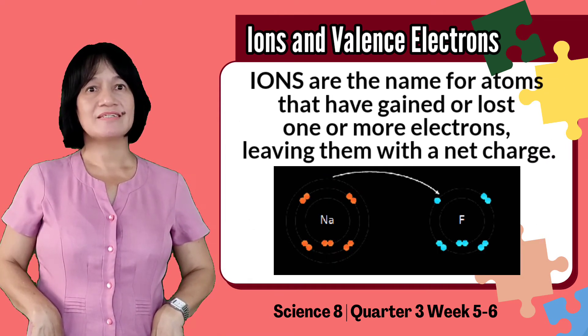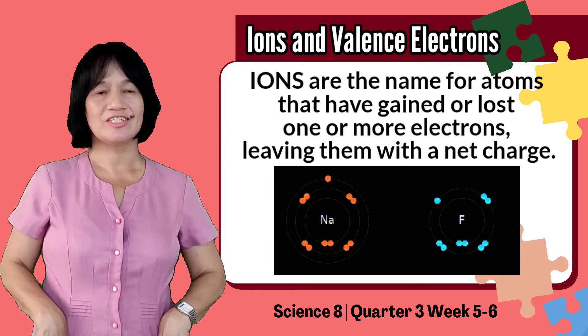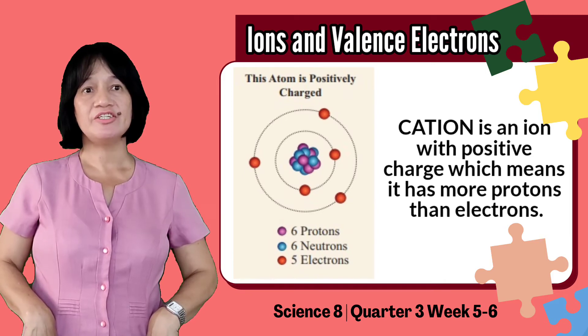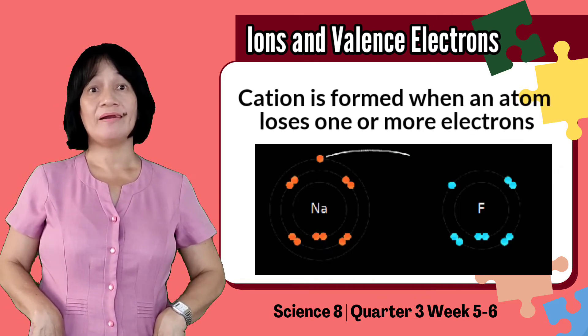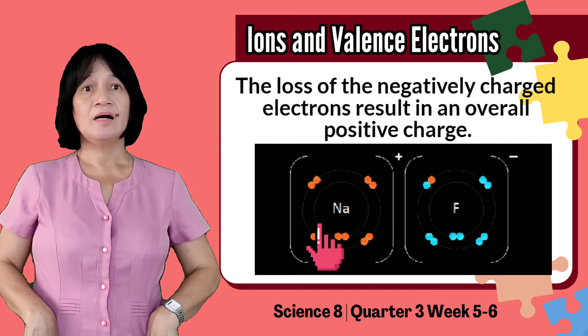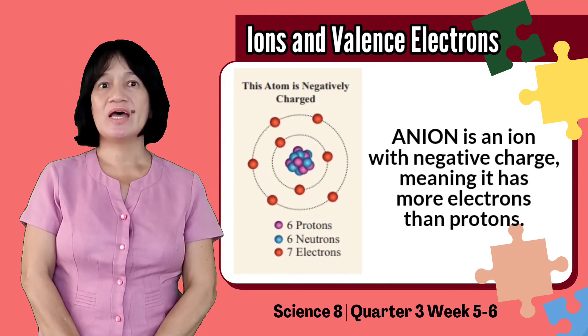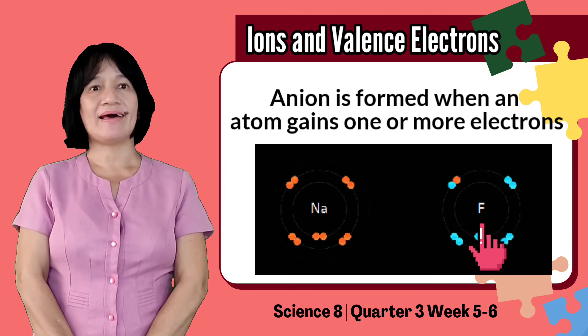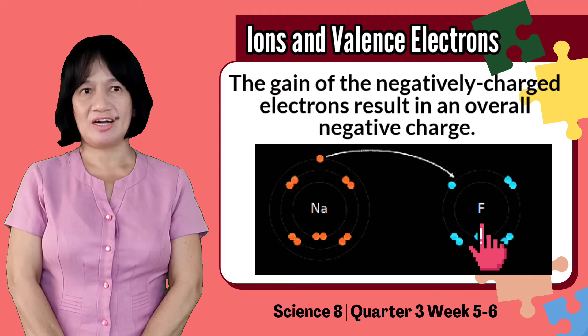Ions are the name for atoms that have gained or lost one or more electrons, leaving them with a net charge. A cation is an ion with positive charge, which means it has more protons (positively charged particles) than electrons (negatively charged particles). When an atom loses one or more electrons, the loss of the negatively charged electron results in an overall positive charge. Meanwhile, an anion is an ion with negative charge, meaning it has more electrons than protons. Anions are formed when an atom gains one or more electrons. The gain of the negatively charged electron results in an overall negative charge.